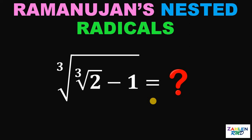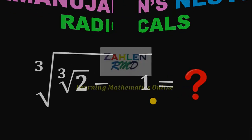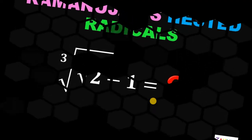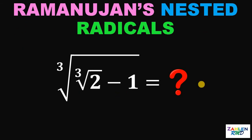Good day everyone. Here's our math challenge for today. The question is: simplify the expression cube root of cube root of 2 minus 1. If you want to try this question, you can pause this video and try it first. If you get the answer, then please consider this suggested solution. By the way, this question is also known as Ramanujan's nested radicals.